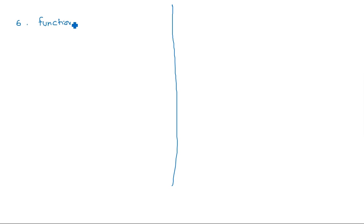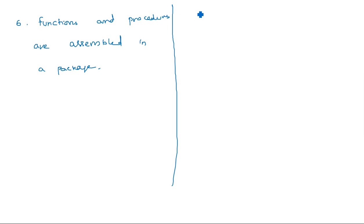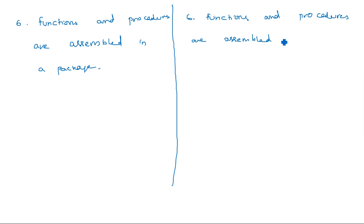The sixth point: in VHDL, functions and procedures are assembled in a single package. Whereas in Verilog, functions and procedures are assembled in separate system files.